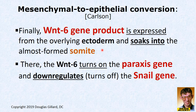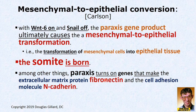One more gene: the WNT6 gene product is expressed in the ectoderm, soaks into the new somite, and turns on another gene called paraxis, while also turning off the snail gene. With WNT on, snail off, the paraxis gene product causes the final conversion of this new somite — which is mesenchymal tissue — into epithelial tissue. That's called mesenchymal-to-epithelial transformation, and the paraxis gene product causes it.